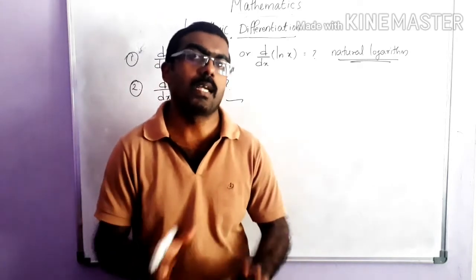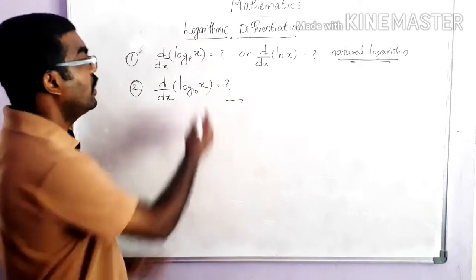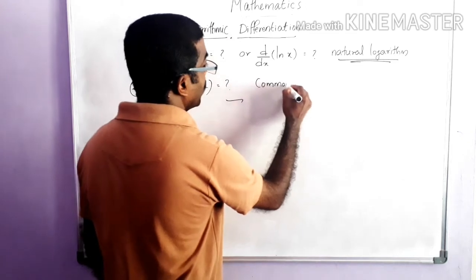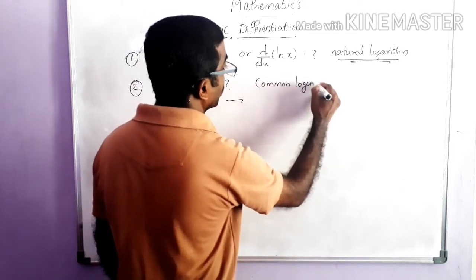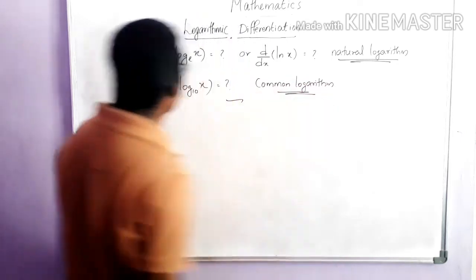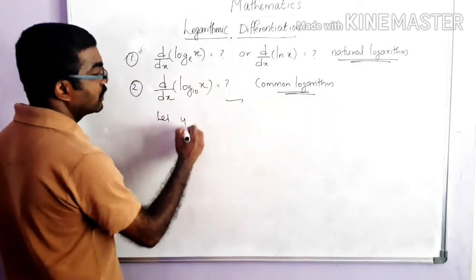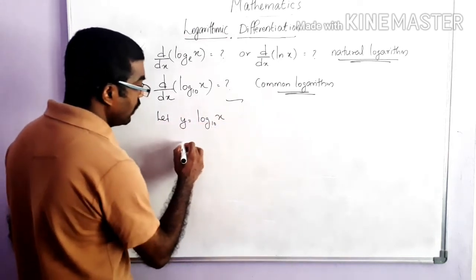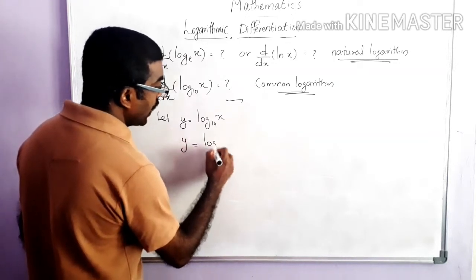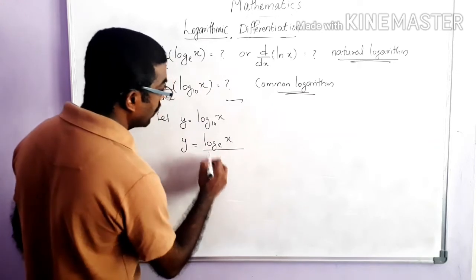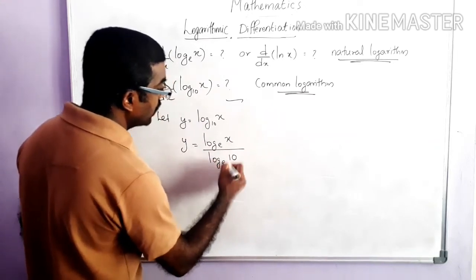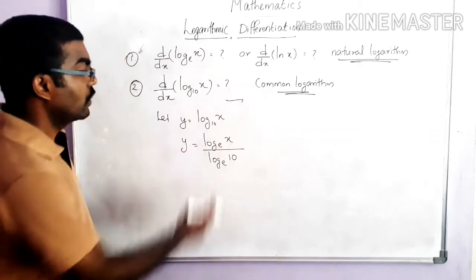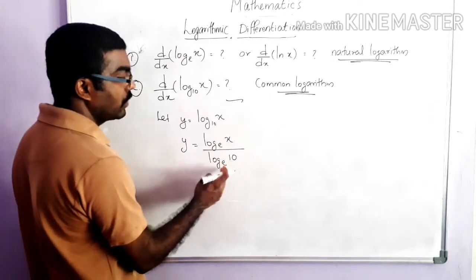Now we move on to the second case: the derivative of log x to the base 10, that means the common logarithm. Logarithms with base 10 are called the common logarithm. Let y equal to log x to the base 10. By the change of base formula we can rewrite this as log x to the base e divided by log 10 to the base e, changing the base to e.